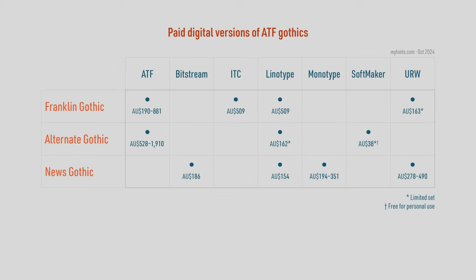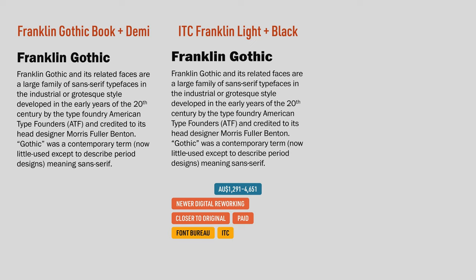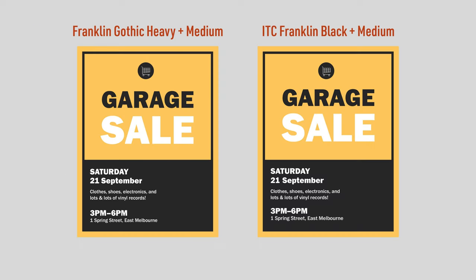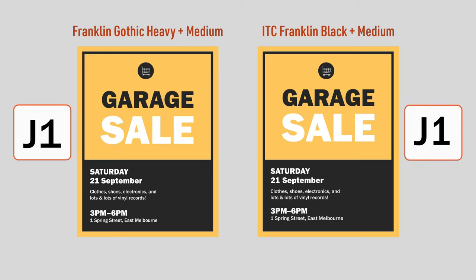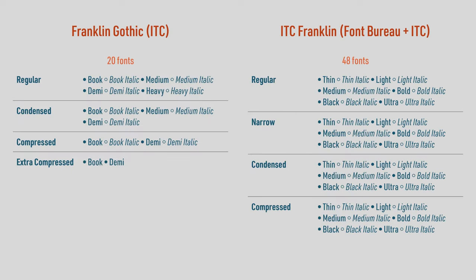Before I finish up, there is one honorable mention I want to talk about. There's technically one more ITC version of Franklin Gothic called ITC Franklin. This one was designed by Font Bureau's David Berlow in collaboration with ITC. It basically takes all the problems I had with the Franklin Gothic font bundled with Microsoft Office and fixes them — for example, it replaces the Book weight with a lightweight that actually looks good in body text, and the medium weight looks more even too. Put the 1979 Franklin Gothic and the 2004 ITC Franklin side by side in a poster and the differences are quite subtle, but the ITC Franklin poster is just slightly easier to read. The biggest difference is that ITC Franklin is a much more complete and fleshed out font family, which alone makes it easier to use.